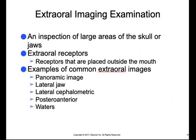An extraoral imaging examination means an x-ray where the receptor is placed outside of the mouth. This is usually an inspection of large areas of the skull or jaws. Examples of extraoral images include a panoramic image, a lateral jaw, a lateral cephalometric — which is basically a profile picture — a posterior-anterior, and a Waters image. A Waters image is a cephalometric image where the patient lifts their chin up approximately 37 degrees.